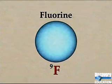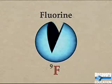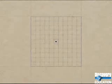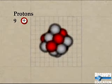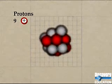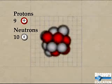Each atom of fluorine consists of a cloud of electrons surrounding a compact nucleus that contains almost all the atom's mass. In the most common form of fluorine, its nucleus has nine positively charged protons plus ten uncharged neutrons.